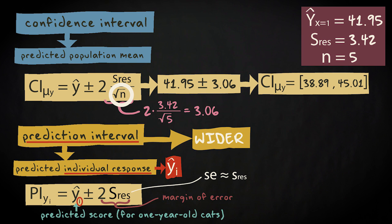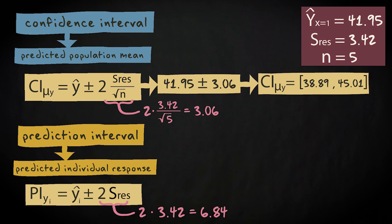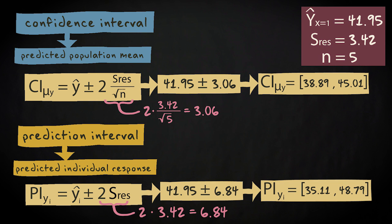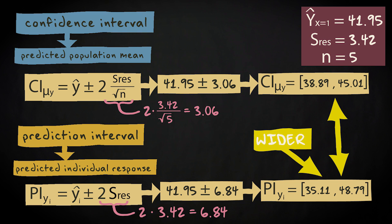In our example, the margin of error for the prediction interval is 2 times 3.42. So the prediction interval around the predicted value of 41.95 for an individual one year old cat ranges from 35.11 to 48.79. As you can see, the prediction interval is wider, less precise, since individual scores will show larger variability than means of scores.